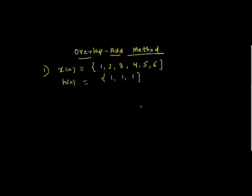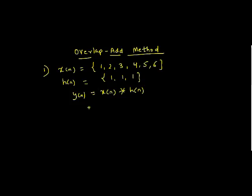Here are the two sequences: x of n is the input sequence and h of n is the impulse response. We need to find y of n, which is x of n convolved with h of n. Let's solve this convolution using the overlap-add method. The first step is to identify the length of the input sequence, which is the largest sequence — that is L, so L is 6. The length of the smaller sequence h of n is 3.